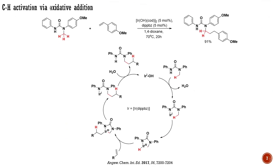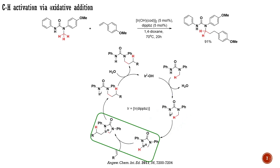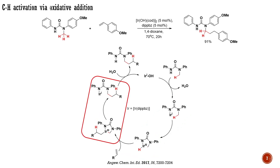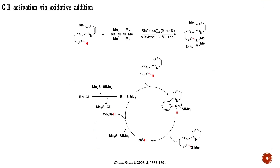As an example, let's consider the iridium-catalyzed CH alkylation of urea derivatives. In this reaction, the amide acts as a directing group, guiding iridium-1 to the nearest CH bond. The oxidative addition of iridium-1 to the CH bond generates an iridium-3 cyclometallated intermediate, which undergoes a syn-insertion into the olefin, generating this intermediate. The final stage of the process is reductive elimination, which, upon hydrolysis, produces the product and regenerates the active catalyst, iridium-1.